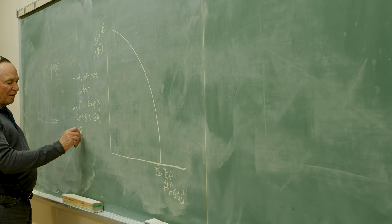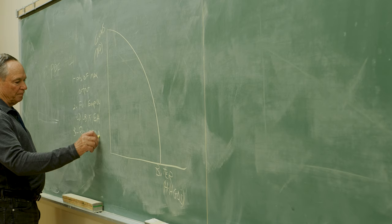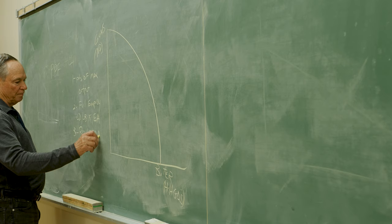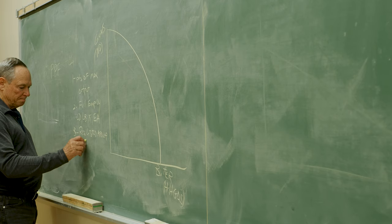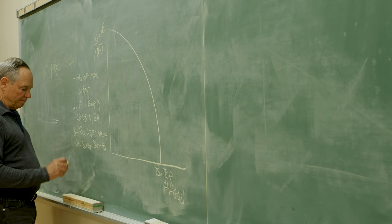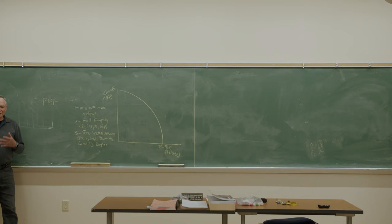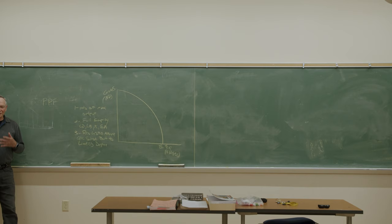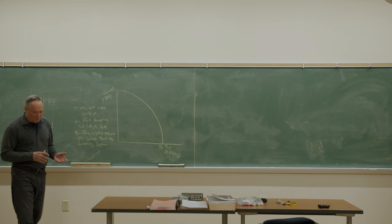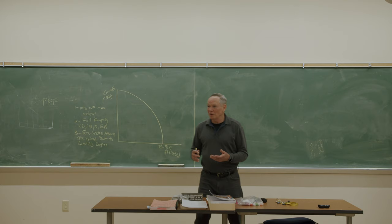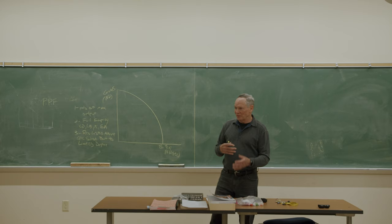We also assume, number three, that the resources I've listed above are substitutable, but to a limited degree. So, we could use more land and less fertilizer, or more fertilizer and less land. We could have guidance systems engineers working on missile guidance systems, or they could leave that kind of work and go into carpentry, right? The resources are substitutable, but they're not perfect.